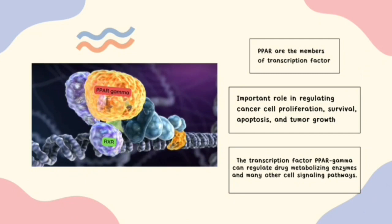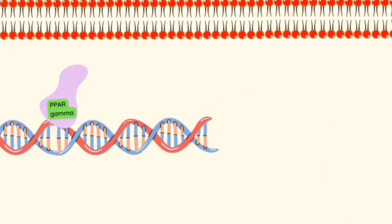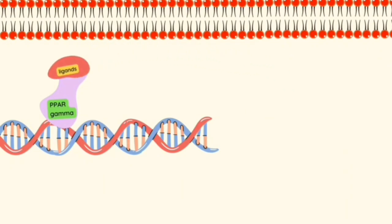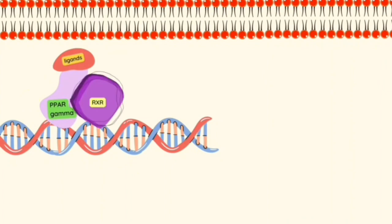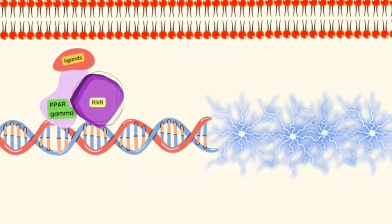PPAR-gamma plays an important role in regulating cancer cell proliferation, survival, apoptosis, and tumor growth. It can regulate drug metabolizing enzymes and many other cell signaling pathways. PPAR-gamma is activated by natural or synthetic ligands. Once a ligand attaches to PPAR-gamma, it switches on and becomes activated. PPAR-gamma together with its transcriptional partner, retinoid X-receptor RXR, performs a heterodimer formation that then triggers multiple pathways.